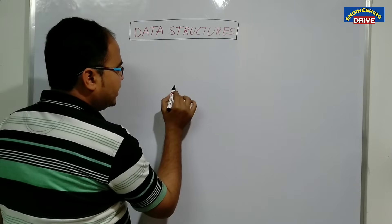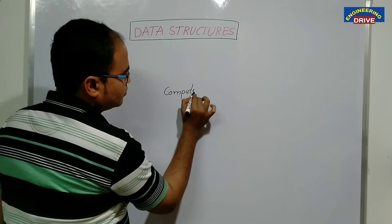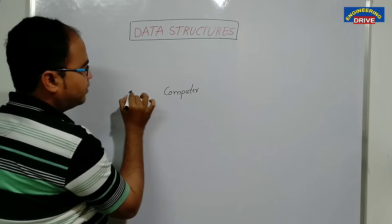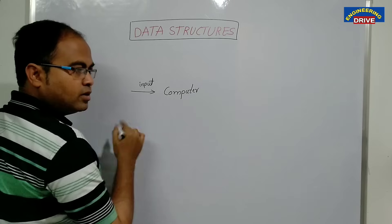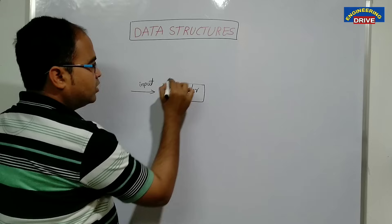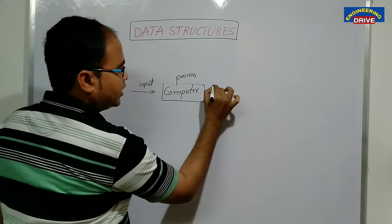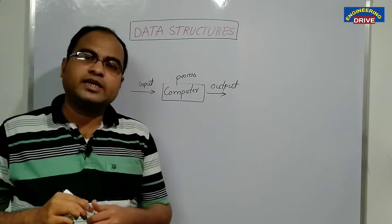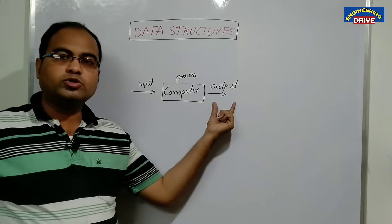For example, let us take our computer. What we will do on a computer? A computer, first of all, takes the input from the user. It will process the input and then our computer will produce the output. So a computer is an electronic machine which accepts the input, processes the input and produces the output.